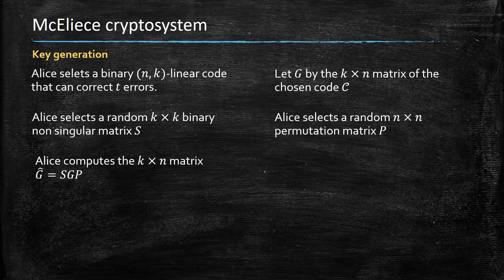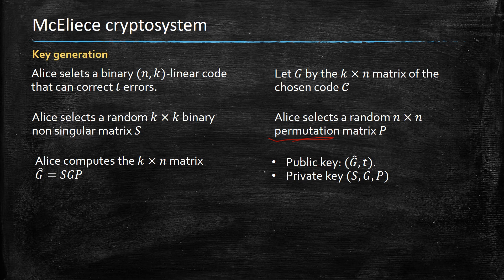Note that there is something special about P: on top of being invertible, it is also a permutation matrix. So we restrict ourselves to this specific kind of invertible matrix, and we will see later why. The public key is G-hat, which is S times G times P, and T. The private key is S, G, and P. We are hoping that the obfuscation of G by multiplying it on the left and right by S and P respectively masks enough information so that it is not possible to retrieve those values from the public key.